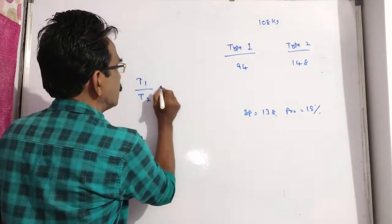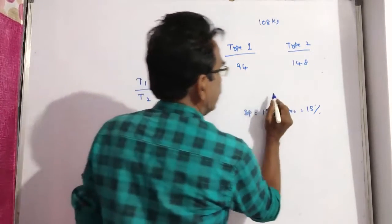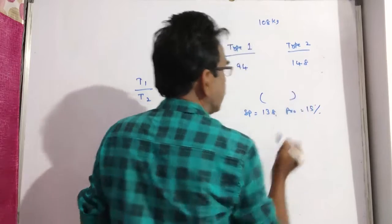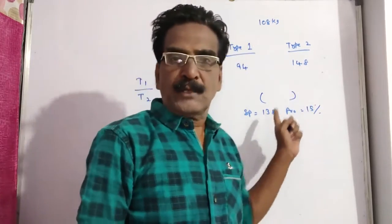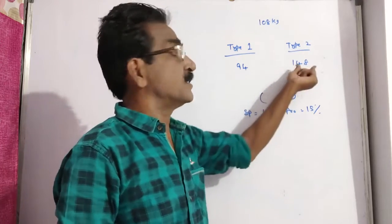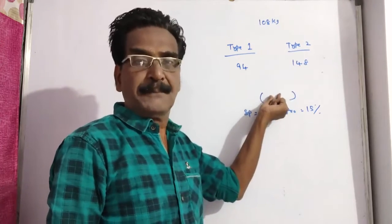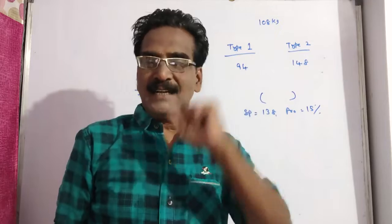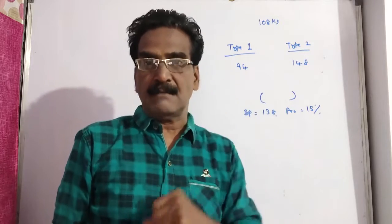Type 1 is to type 2 is equal to... Here, we cannot put the sold price. We cannot put the sold price. Here the mean price, this is cheaper, this is dearer, this is mean price. Mean price means cost price, that is worth price.